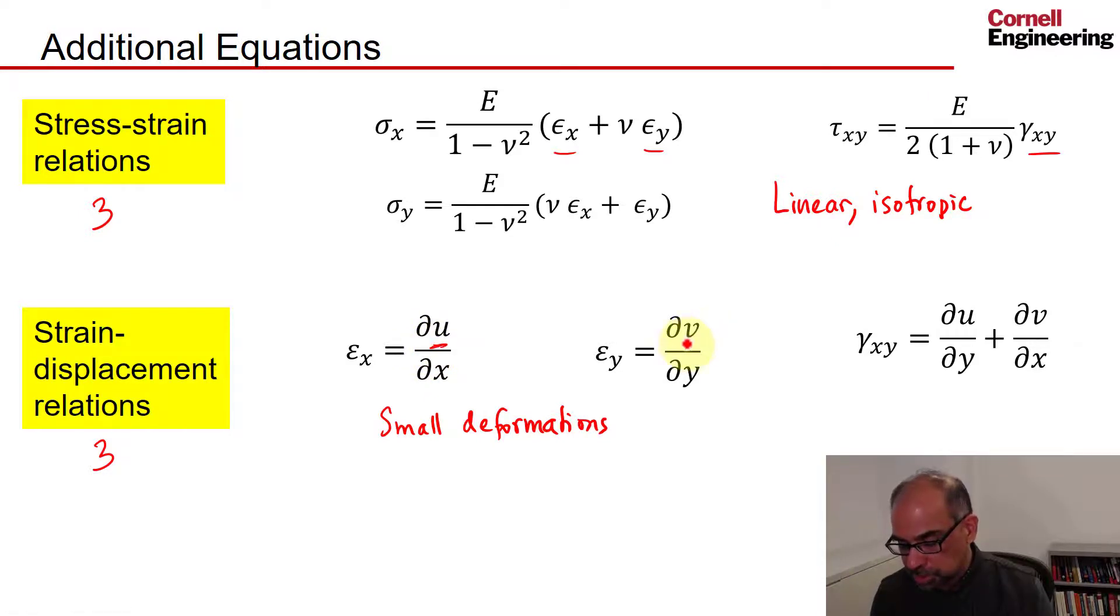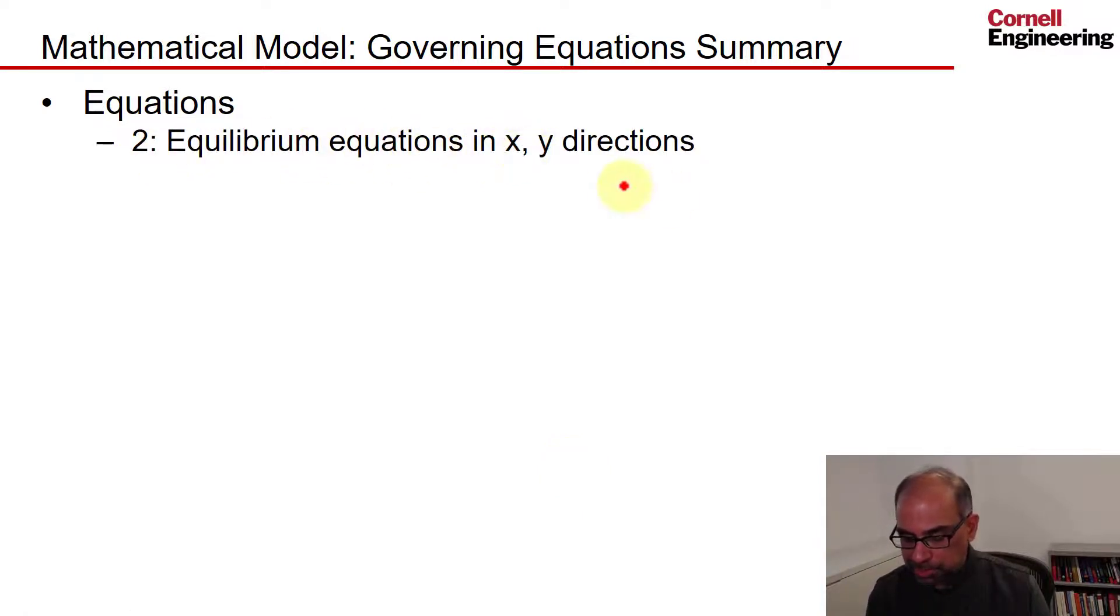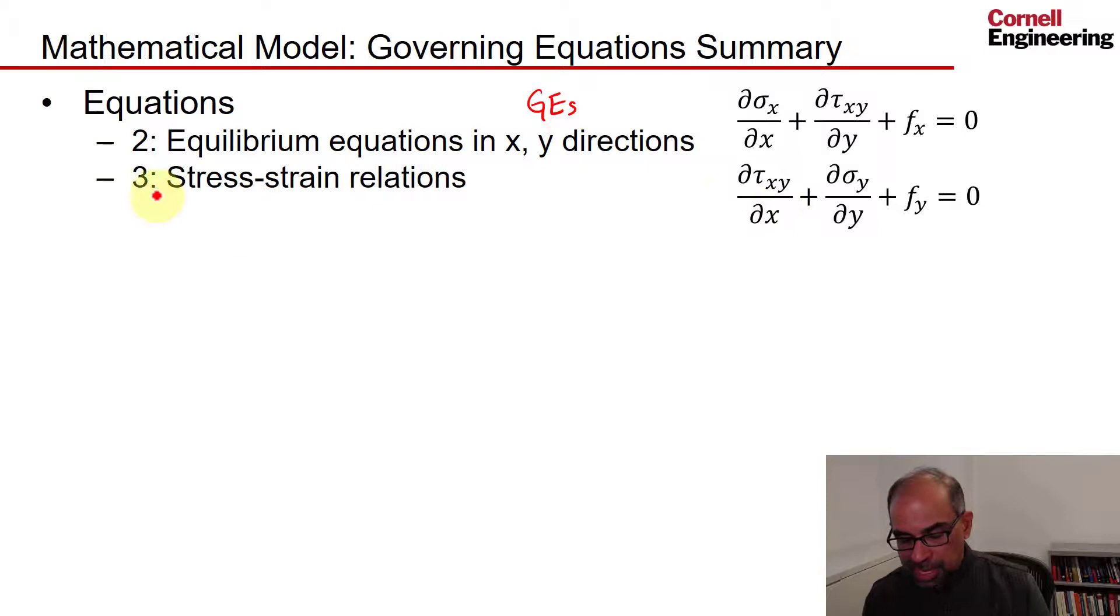Now we should have a closed set of equations. Let's take stock by summarizing what we have. We have two equilibrium equations in the x and y directions—these are the governing equations. We have three equations from the stress-strain relations and three strain-displacement relations.